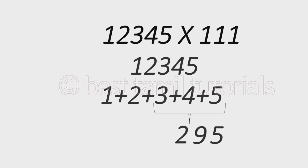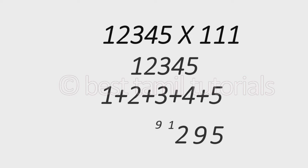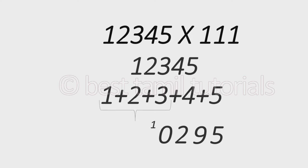If you get 2, we will carry 1 as balance. We will add 3 numbers: 4 plus 3 plus 2, we will add 9. Then we will add 3 plus 2 plus 1 to get 10. In 10, you will write 0 and carry 1 as balance. Next, you will add 3 plus 2 plus 1, which gives 6, so you will write 7.